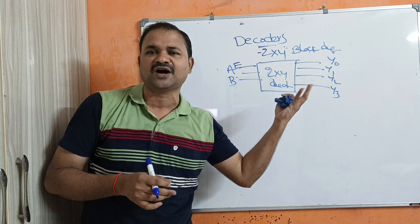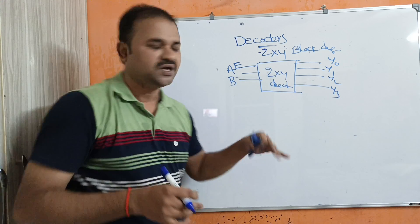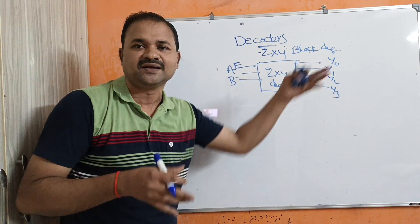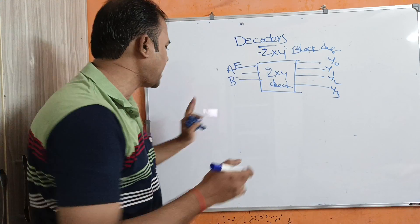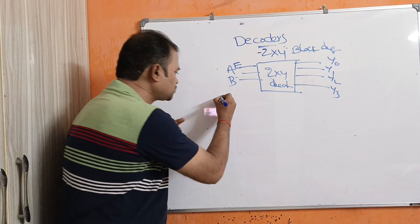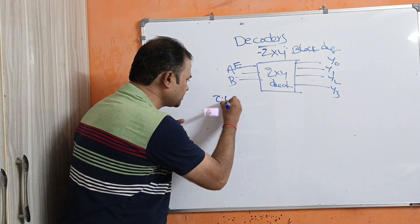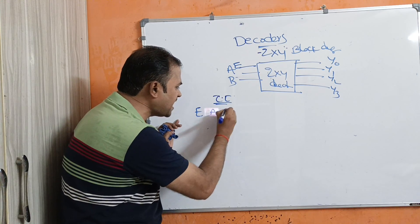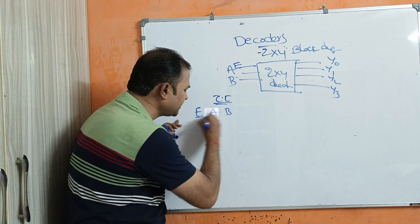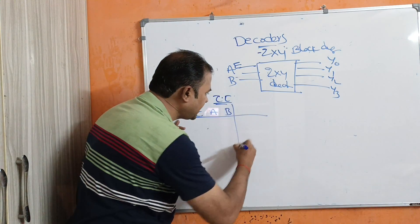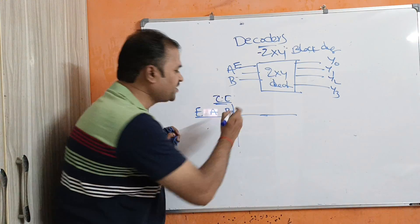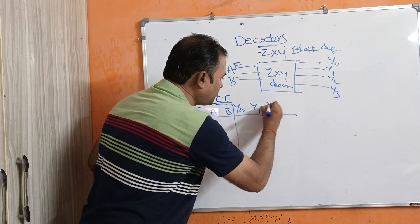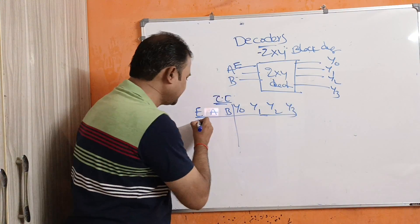Now let us see the truth table. The inputs are A and B, and the outputs are Y0, Y1, Y2, and Y3.